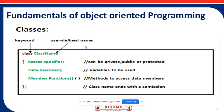The syntax for a class uses the keyword 'class', followed by a user-defined class name, then opening curly braces. Inside, access specifiers can be private, public, or protected. Data members — variables — and member functions — methods — to access those data members are declared inside. The closing curly brace is followed by a semicolon, ending the class definition.